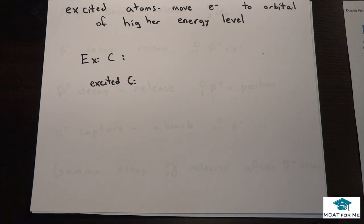So the next thing we're going to be talking about are excited atoms. So that's when electrons move from orbital, their normal orbital to a higher energy level orbital. And we'll see what I mean by that.